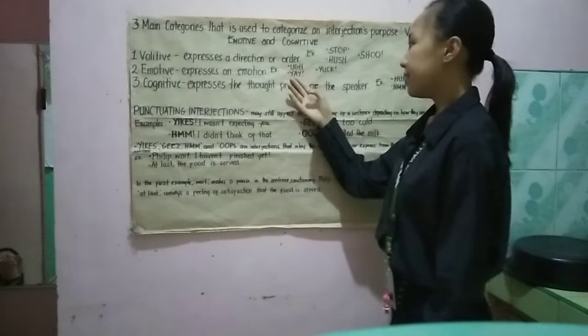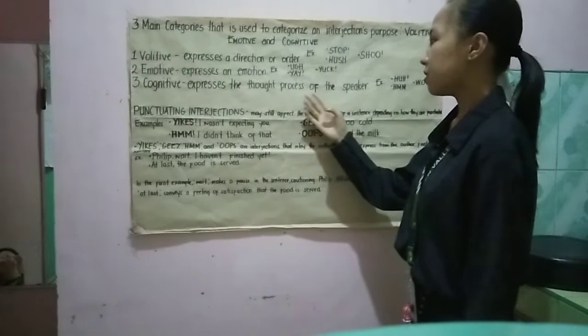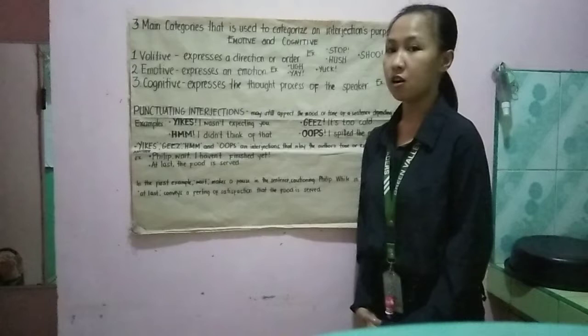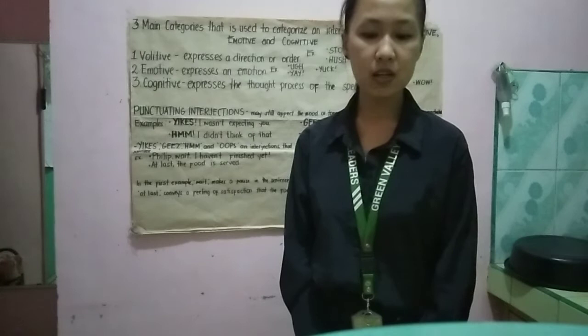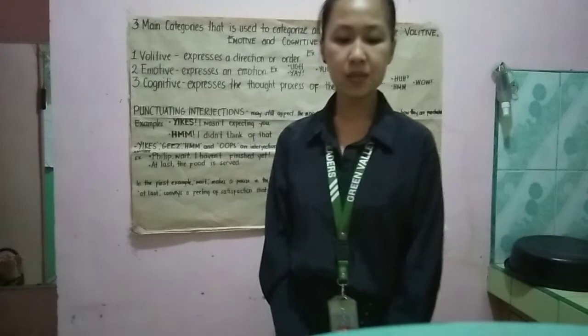Number three, COGNITIVE expresses the thought process of the speaker, often related to confusion or comprehension. Examples: HUH, HMM, or WOW. Typically, Cognitive interjections are used when a speaker is processing new information, solving a problem, connecting pieces of information in a novel way, or otherwise deep in thought.